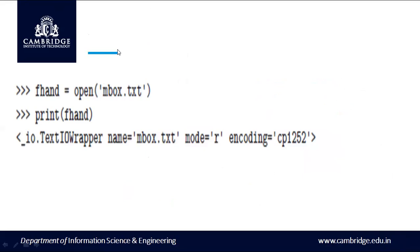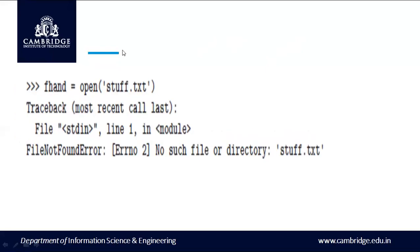Here is an example to open a file called mbox.txt. We use 'fhand' as the file handler and the 'open' command. Within the parenthesis, 'mbox.txt' is the file name to open. When we print this file handler, you can see the name of the file is mbox.txt and it is in reading mode. If you try to open a file which is not present, you get an error like 'no such file or directory'.